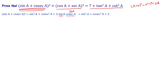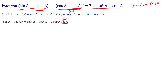Next, take the second part: (cos a + sec a)². This is also an (a + b)² formula. Expanding: cos²a + sec²a + 2·cos a·sec a. Since sec a = 1/cos a, the cos a cancels, giving cos²a + sec²a + 2.